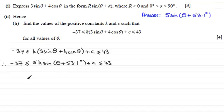So let's just have a look at the maximum value. When the sine of theta plus 53.1 degrees equals 1, we're just going to have 5k times 1, that'll be 5k plus c. And that's got to equal this maximum value of 43. So therefore, what we're going to have is 5k plus c must equal 43.